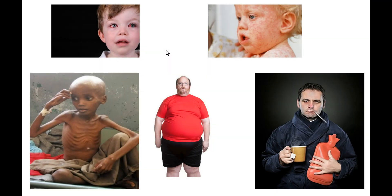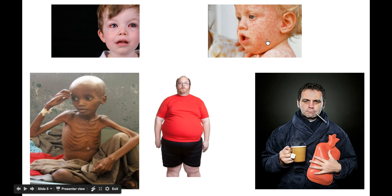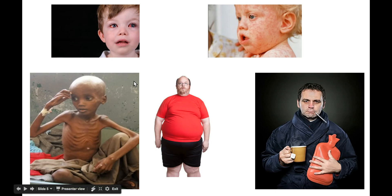If I was to ask you to talk to me about these five images, you would be able to tell me that each one of them doesn't look quite right. We can see that the child at the top here has very red eyes, his eyes are also watery and he looks quite distressed. This child at the top on the right is suffering from some kind of illness — in this case he's suffering from measles.